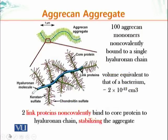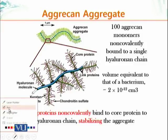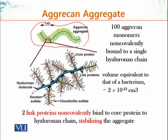Here we have a graphic representation of aggrecan — the total molecule on the top. This is an aggrecan molecule, which can be about the size of a bacteria; we refer to this as the aggrecan aggregate. The backbone of this molecule is hyaluronic acid, shown here as a blue string, and to this molecule there are additional proteoglycans attached. Keratan sulfate and chondroitin sulfate molecules are attached to hyaluronic acid indirectly with the help of a core protein.